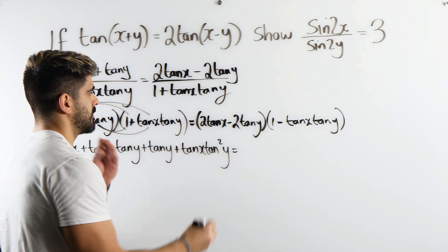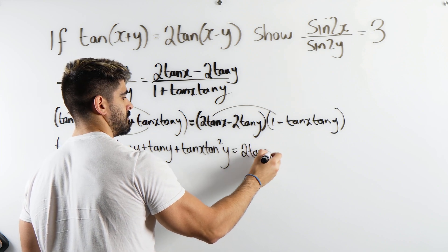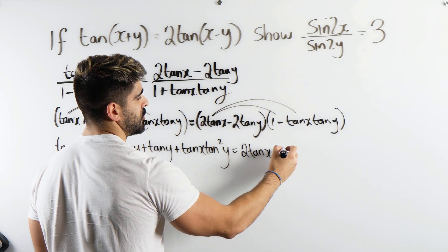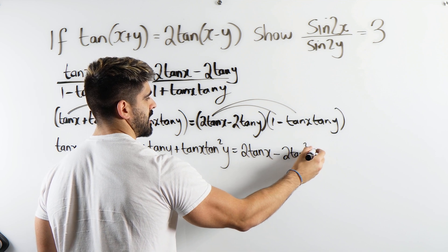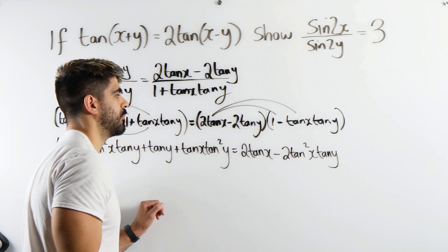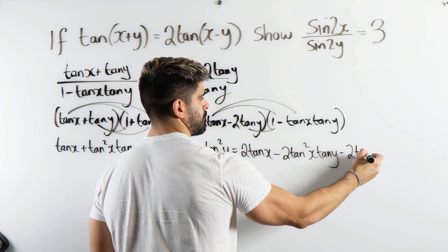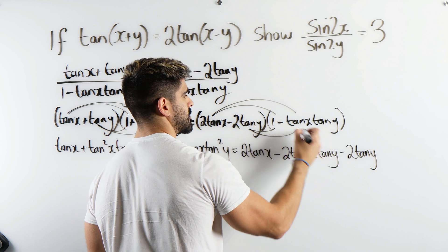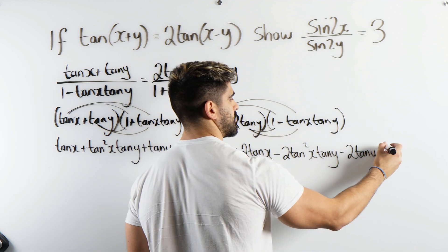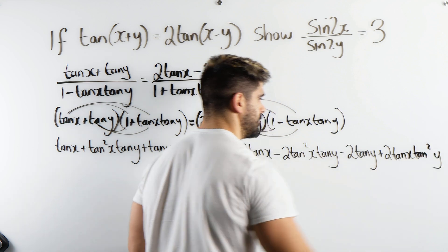Here we're going to get 2 tan x, here minus 2 tan squared x tan y. Taking up the whole board, so minus 2 tan y plus 2 tan x tan squared y.